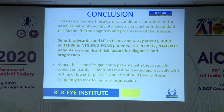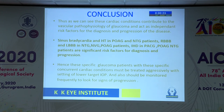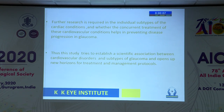In conclusion, these cardiac conditions do contribute to the primary vascular pathology of glaucoma and can act as independent risk factors for the diagnosis and progression of the disease. Sinus bradycardia and hypertension in POAG and NTG patients, RBBB and LBBB in NTG, NVG, and POAG patients, and ischemic heart disease in angle closure glaucomas are significant risk factors. Hence, these specific glaucoma patients must be treated more aggressively with lower target IOP and monitored frequently for signs of progression. Further research is required into the individual subtypes of cardiac conditions and whether concurrent treatment can help prevent disease progression in glaucoma.